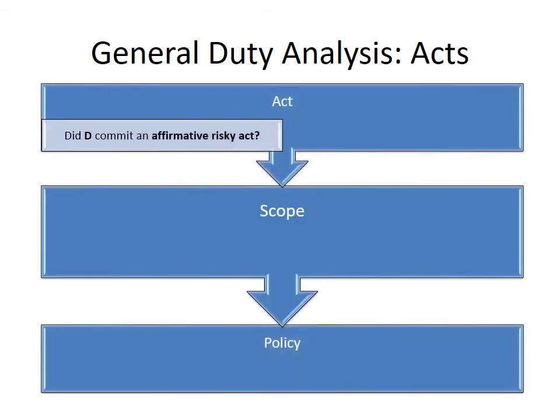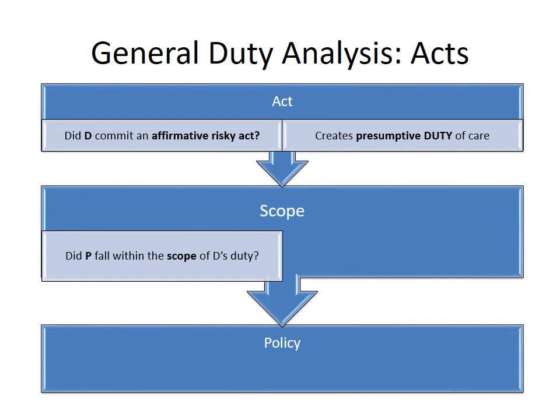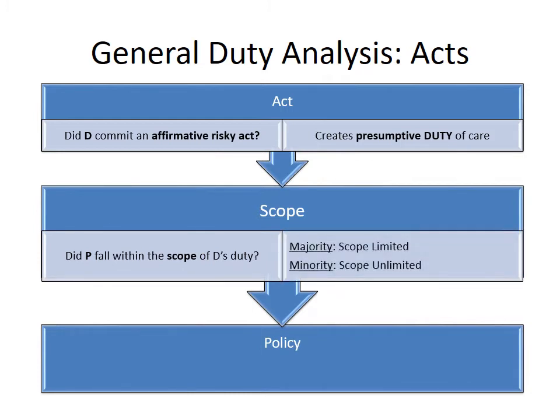So far we've covered the first two steps of the general duty analysis for affirmative risky acts, and here we're going to be picking up with the last step. But first, let me remind you what that three-step analysis is and what we've already learned. The first step is that the defendant has to commit some affirmative risky act that imposes some danger on the plaintiff. Generally speaking, when people act they carry a burden or duty of care, but we also know that some jurisdictions—in fact the majority of jurisdictions—will limit the scope of that duty, and they use the concept of foreseeability to do that.